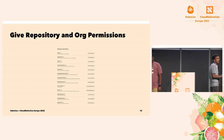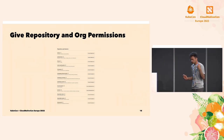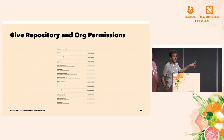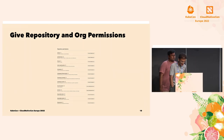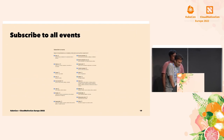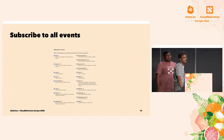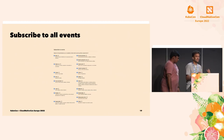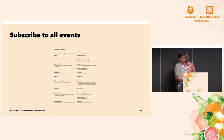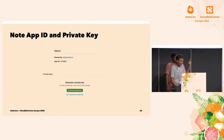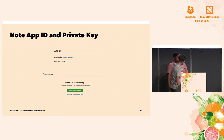There is a section called subscribe to events, and you need to subscribe to all events, because Prow needs to know what's happening to the repository in order to react to it — this is where the Hook system Nabharun talked about comes in. Once you're done creating the app, make sure to note the app ID and generate a private key. Keep them very secure, because we are going to use them later.